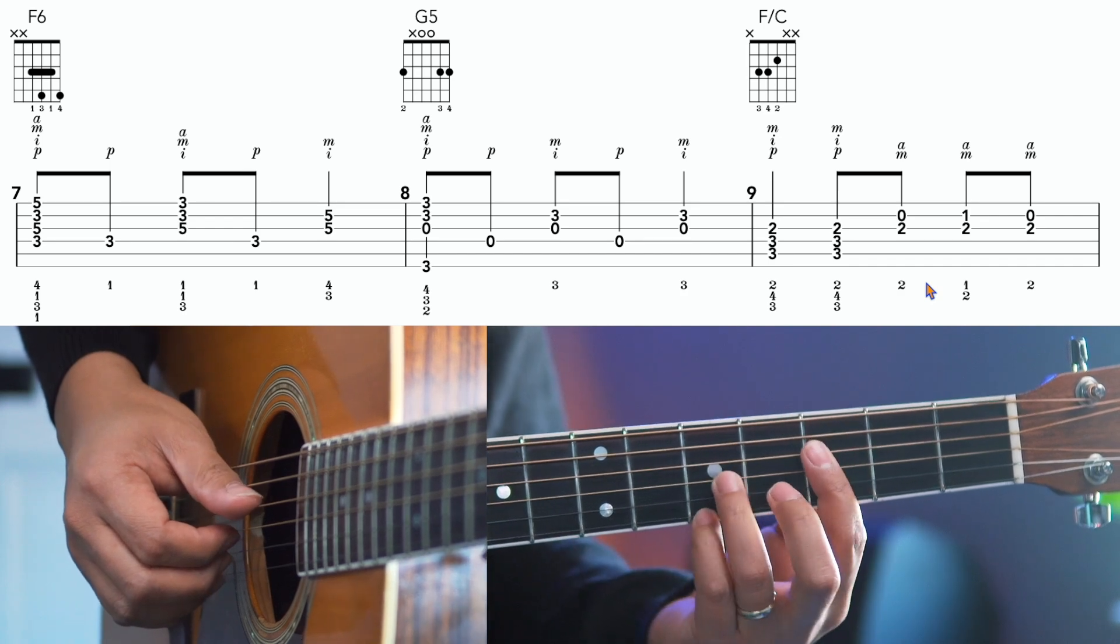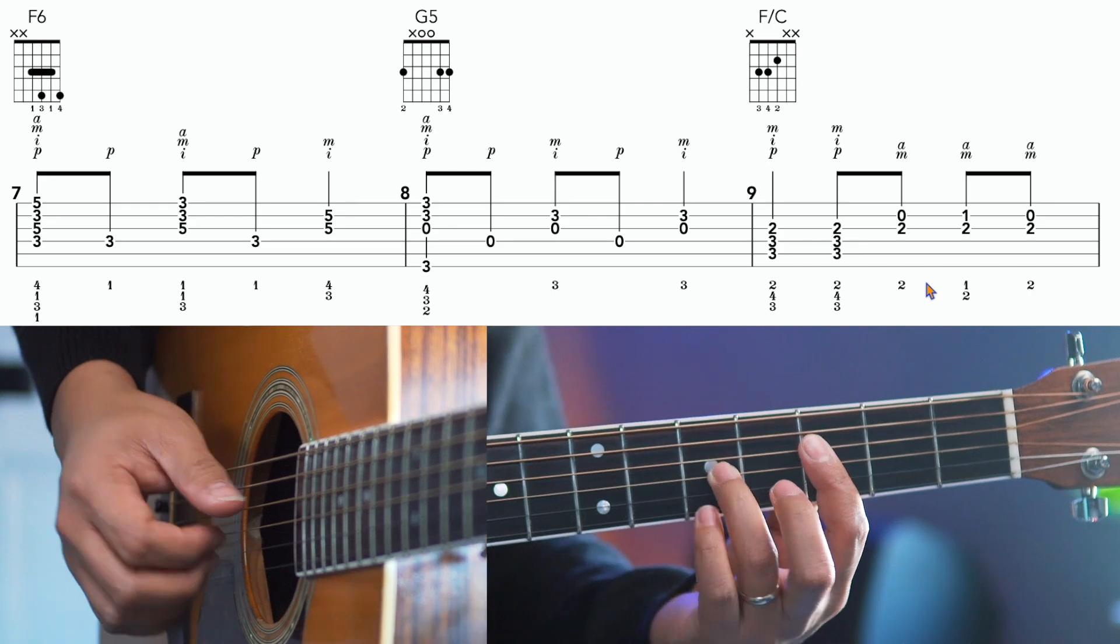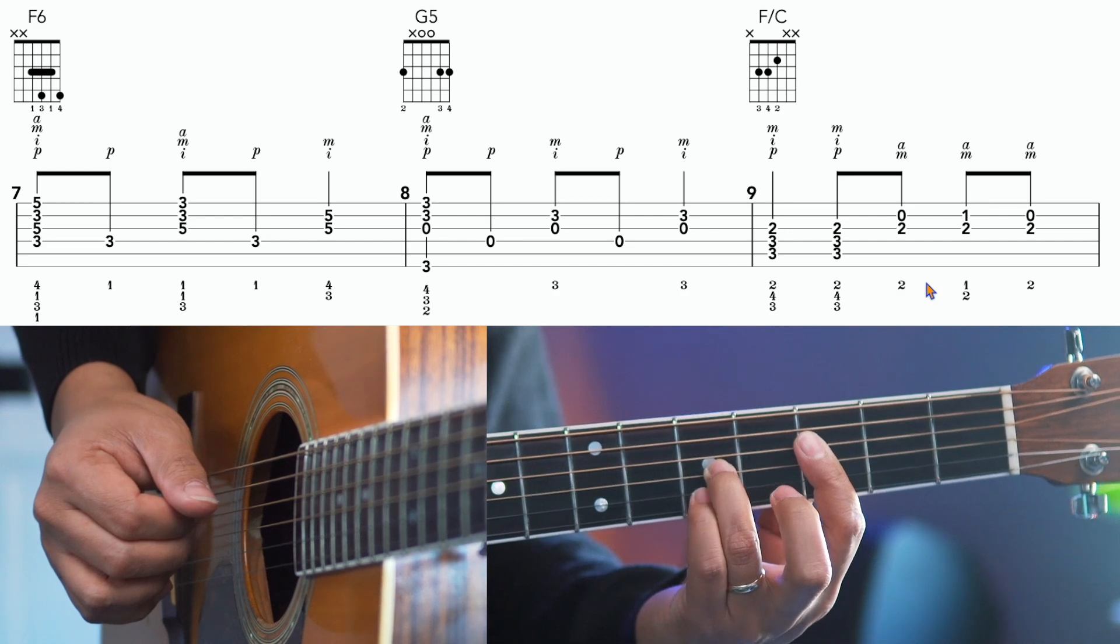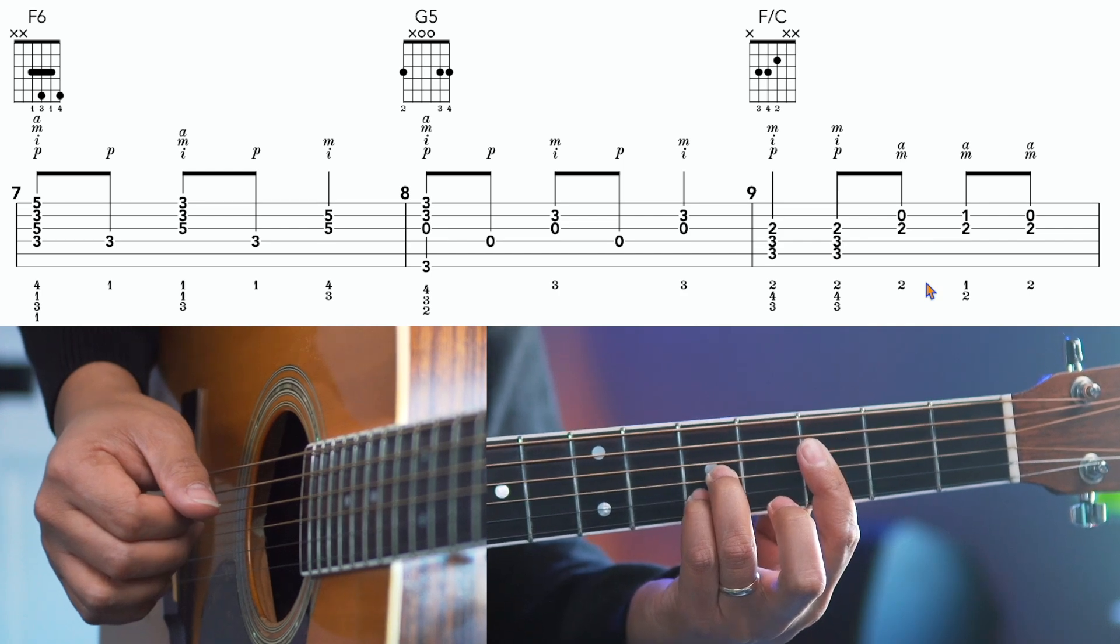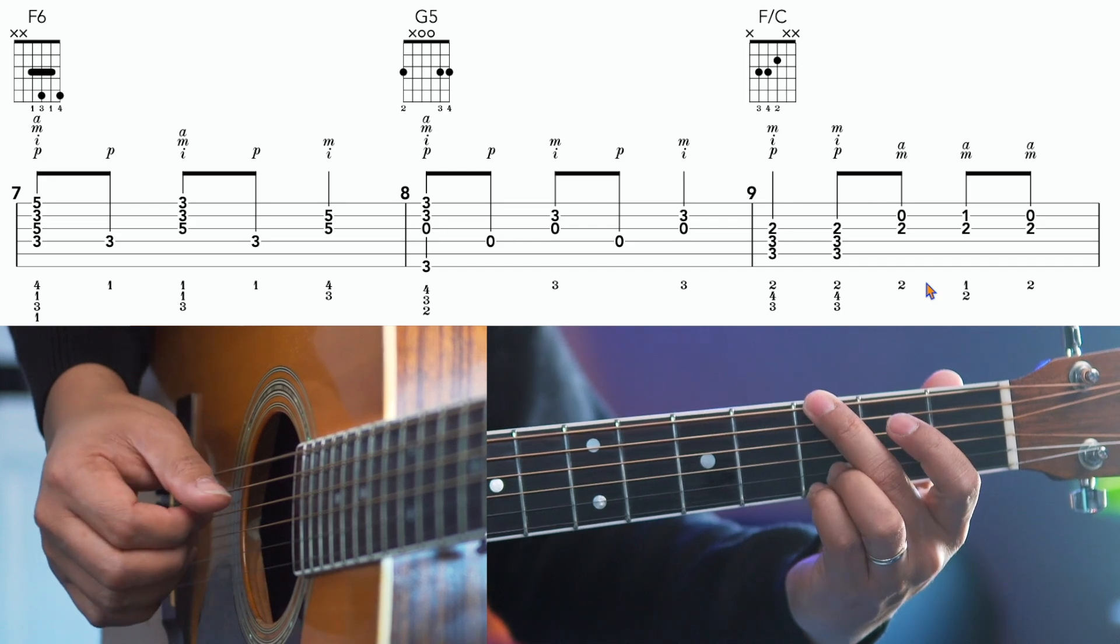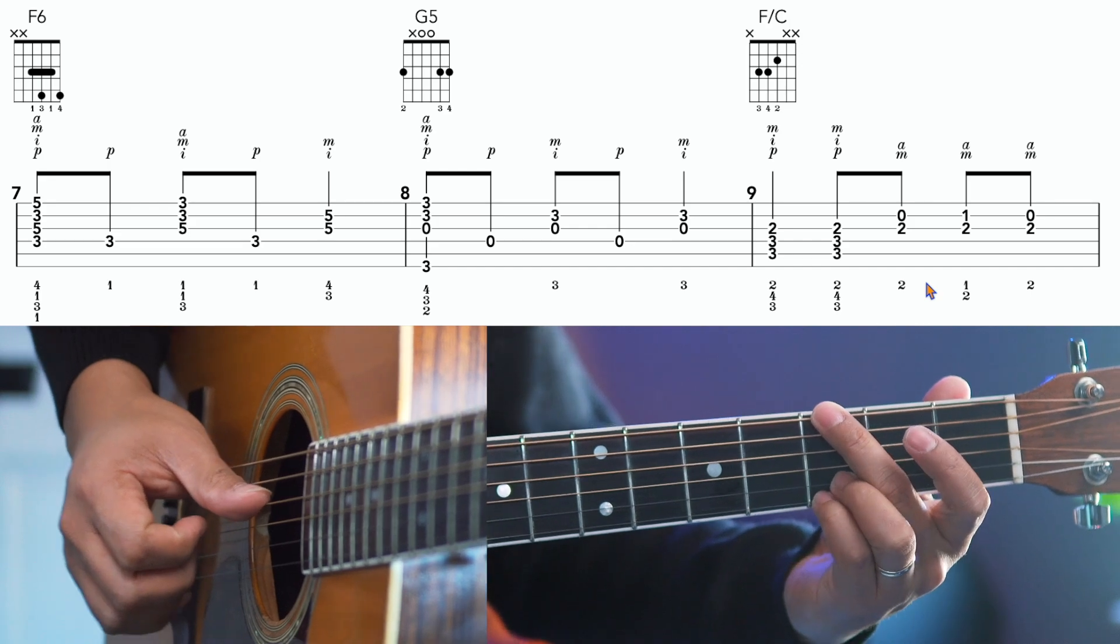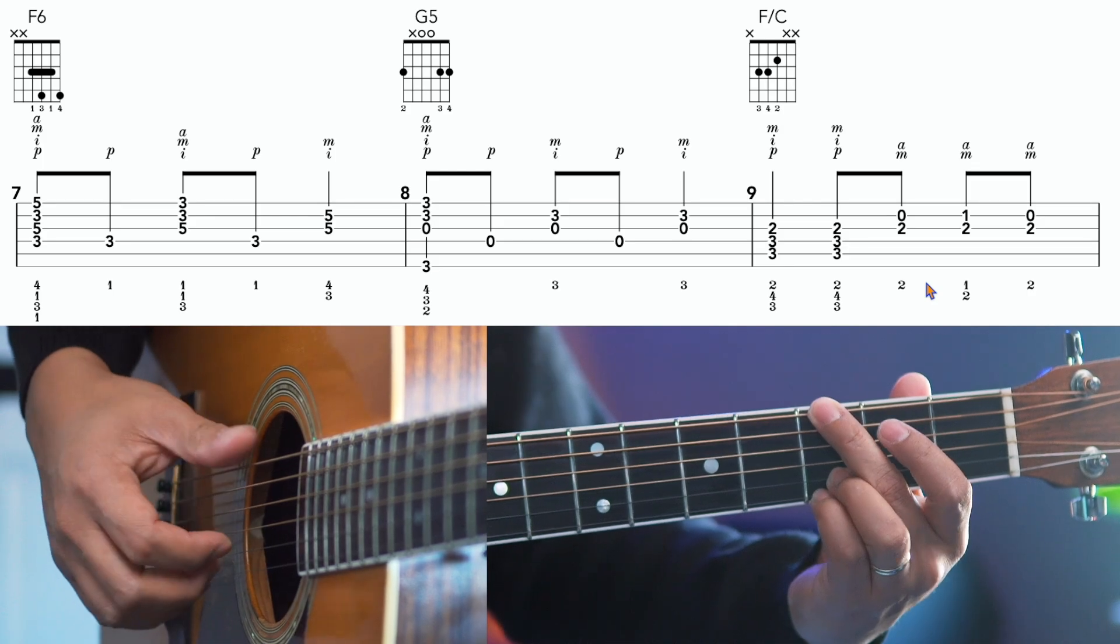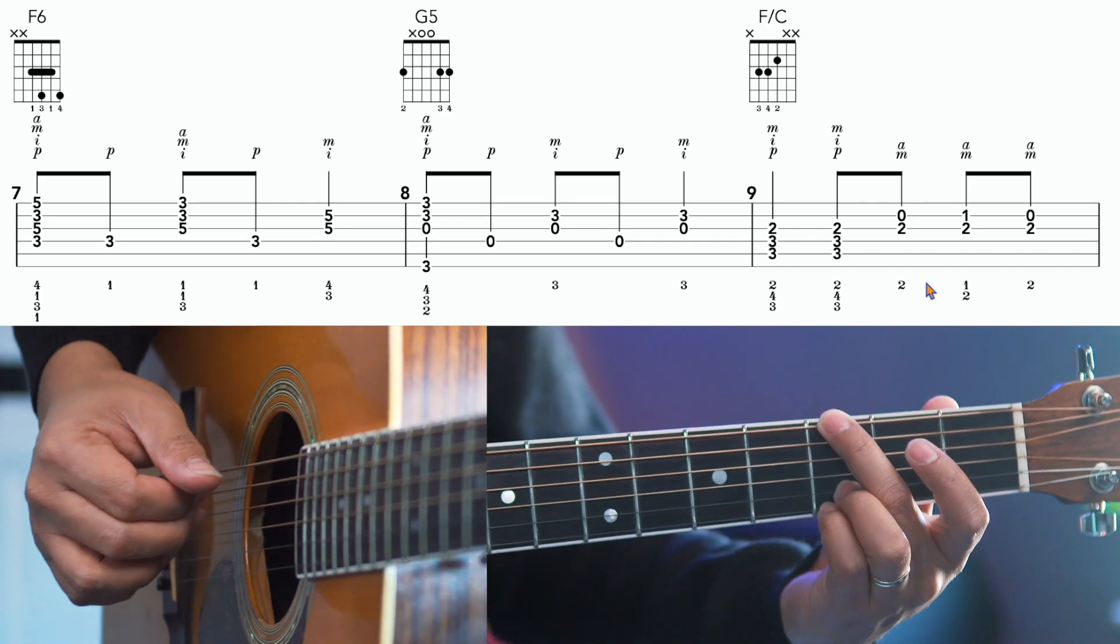So bar 7, same rhythmic pattern. 1 and 2 and 3. But of course, the melody is moving here every beat. First beat is this one. Second one, we're going to lift up that pinky. And on beat 3, I'm going to put my pinky back down, but on the B string. And on bar 8, go back to this G chord. But now my bass note is on the D string, open D string here. Now, bar 9, back to position 2.